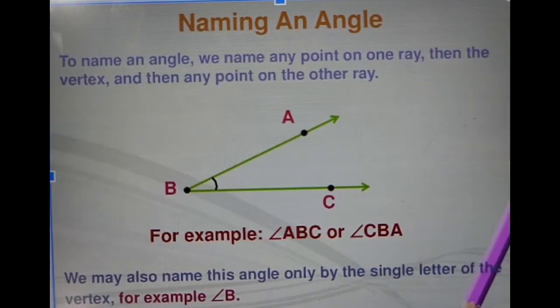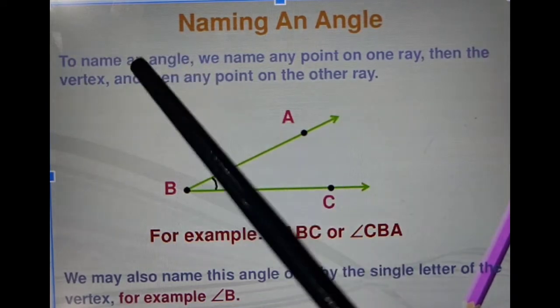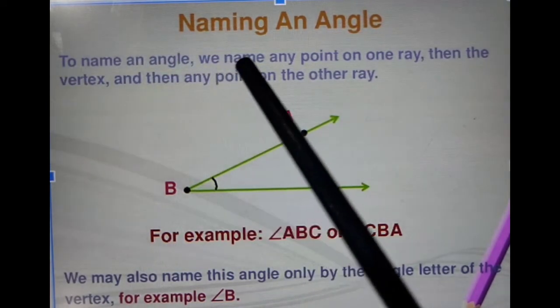Next is the naming of an angle — how we can name or give notation to the angle. To name an angle, we name any point on a ray.